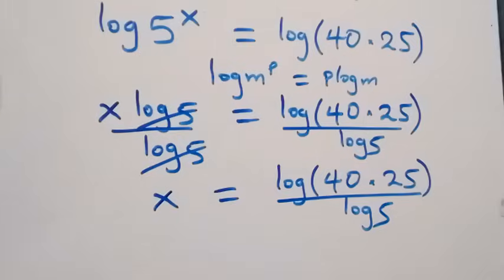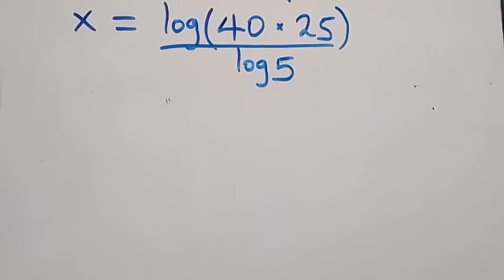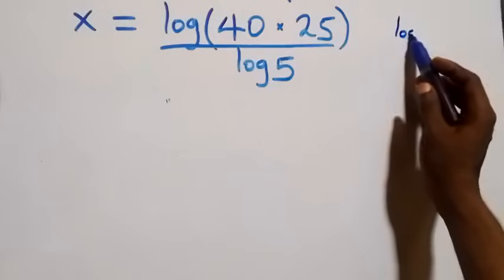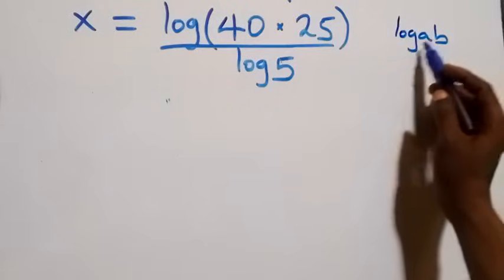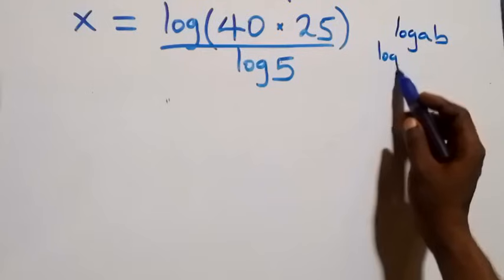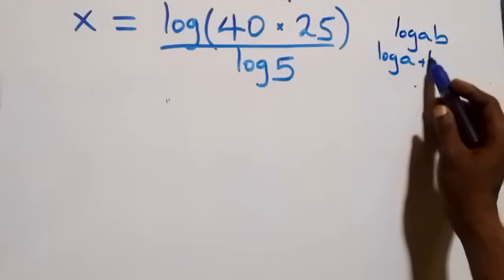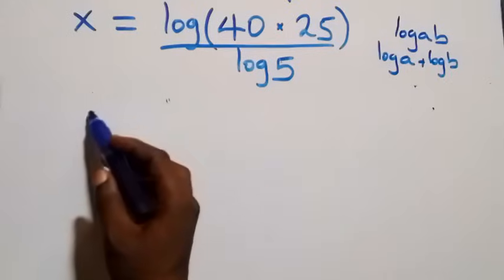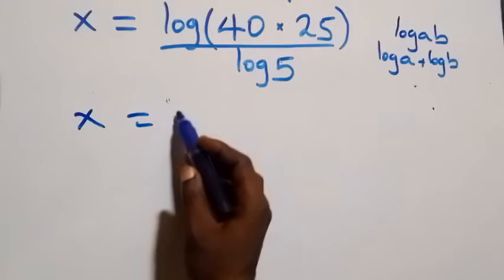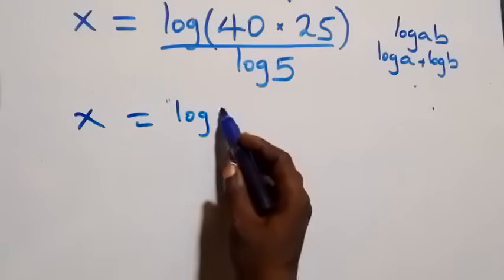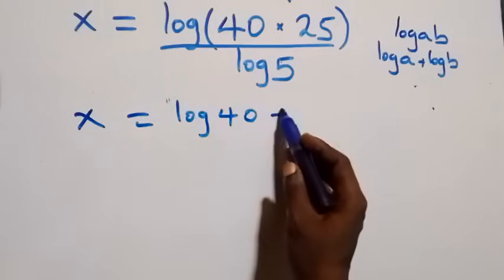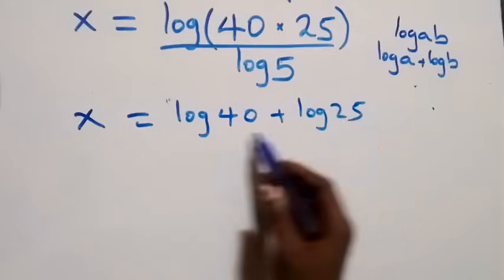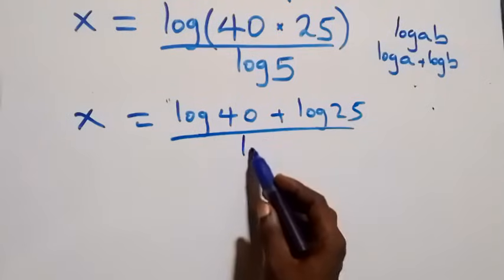From here, we follow the law of logarithms: log of a times b is the same as log a plus log b. So what we have becomes x equals log 40 plus log 25, all over log 5.